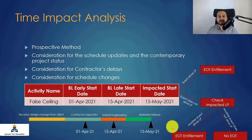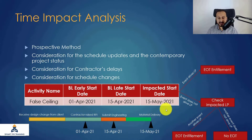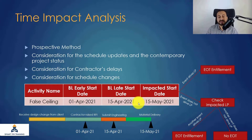This is the same example from the last slide — the false ceiling with the same early and late dates and the same impacted start date. This is a representation of the consequences of this event. In the previous slide we had total float of negative 30, equal to the EOT entitlement, because it was a baseline program.